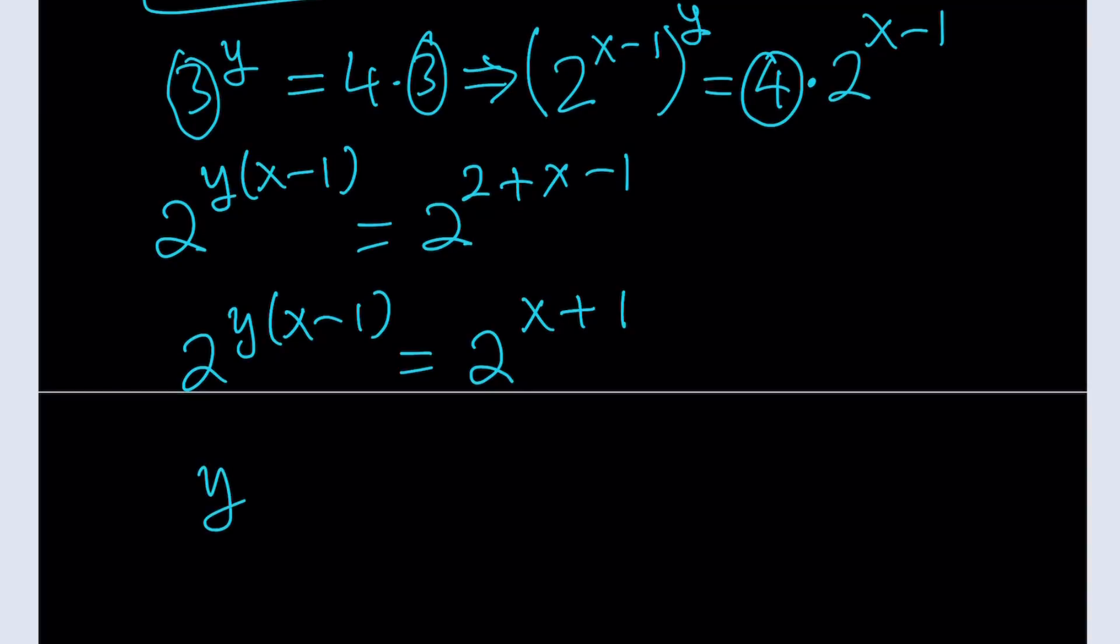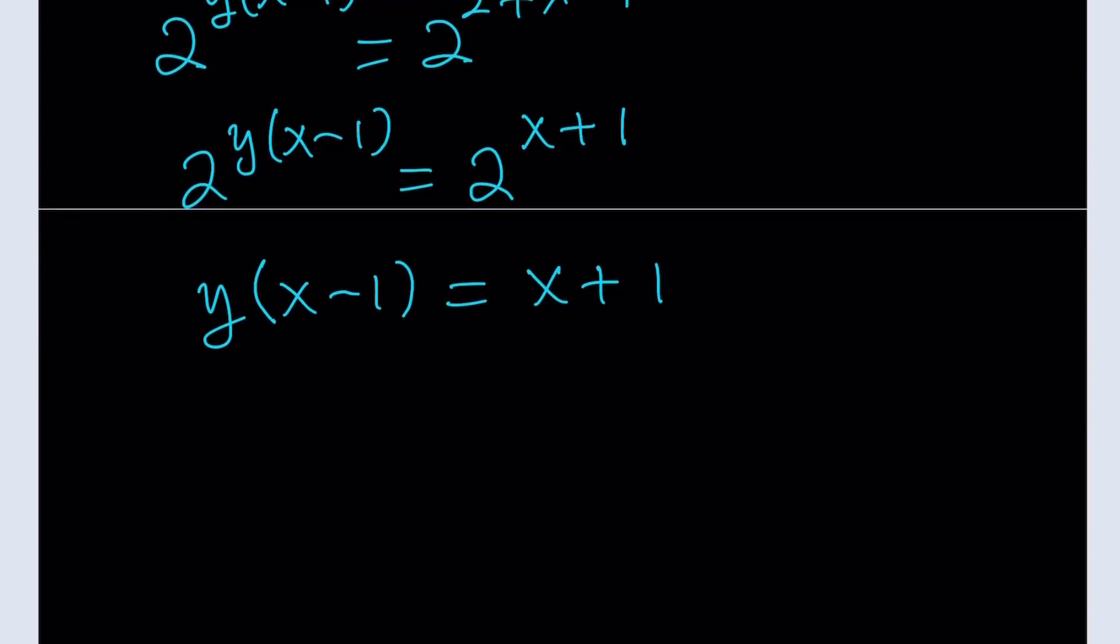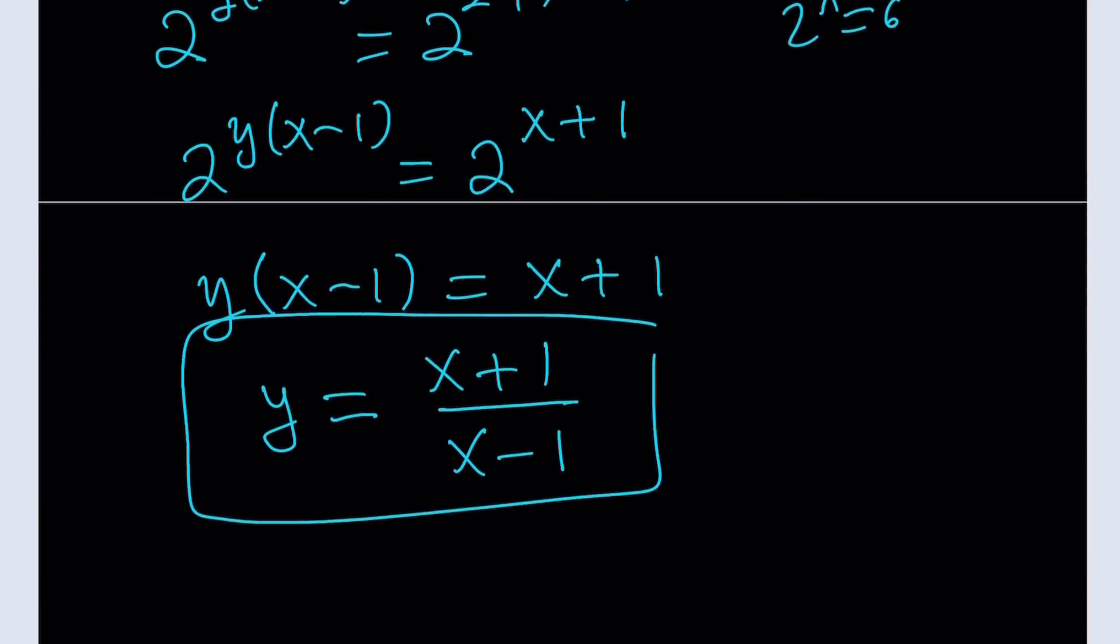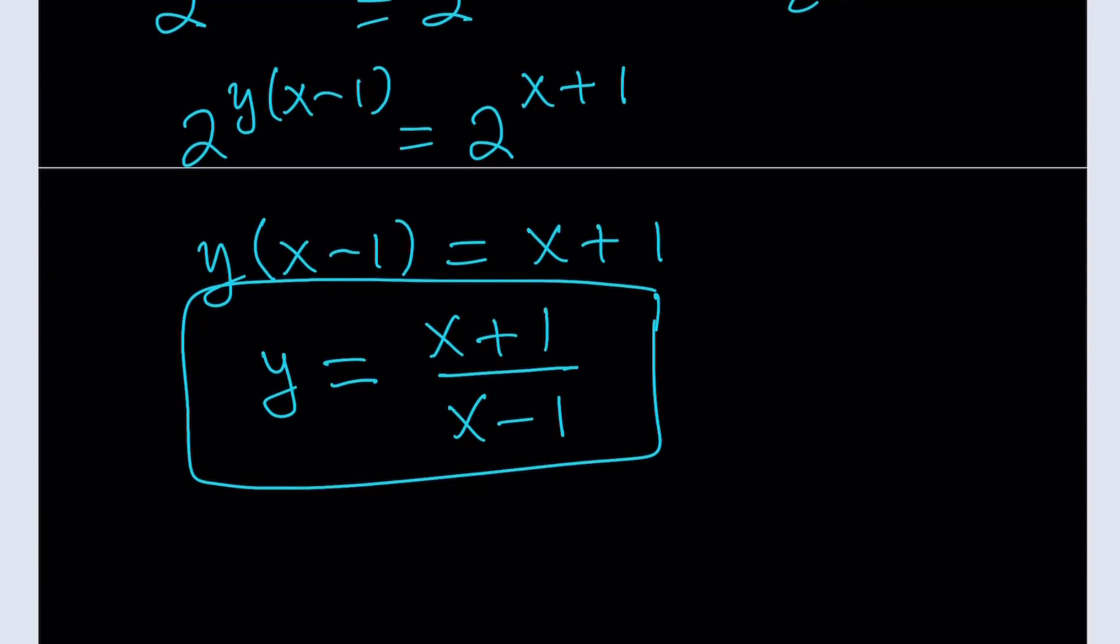So now we can safely say that y(x-1) = x+1. Now, the good thing about not distributing the y is we don't have to factor it again. Now, we can just go ahead and divide both sides by x-1. And obviously, x does not equal 1. Come on. We are given 2^x = 6. Everybody knows that, hopefully, x does not equal 1. If you divide both sides by x-1, you get y = (x+1)/(x-1). Did we get the same thing with the second method? Yes, we did. So our method is probably correct, right?